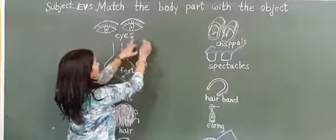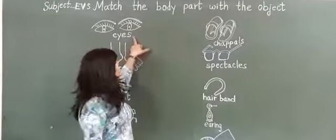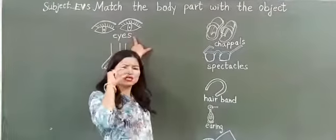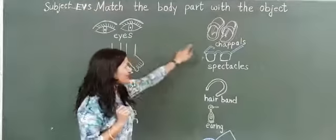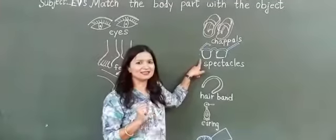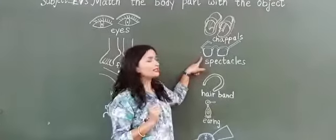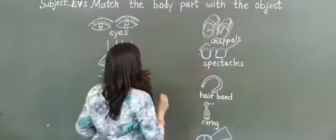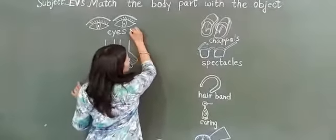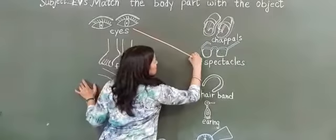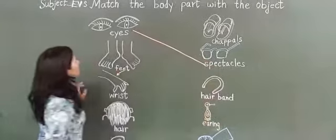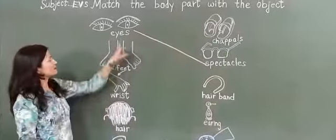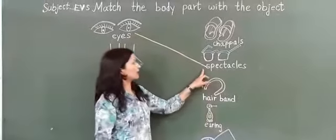Eyes. Can you tell me what we are using in our eyes? Yes. What is this? Spectacles. We call it goggle also. Now teacher is going to match it with spectacles. Eyes with goggle.